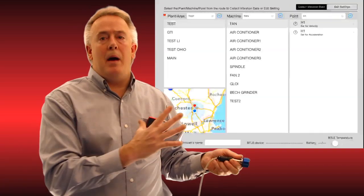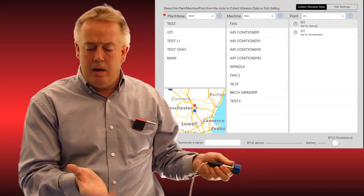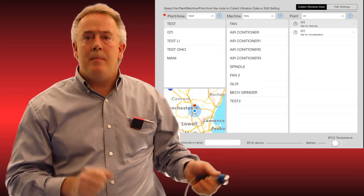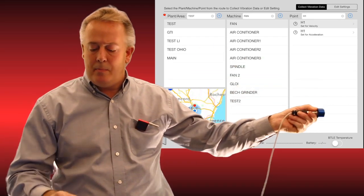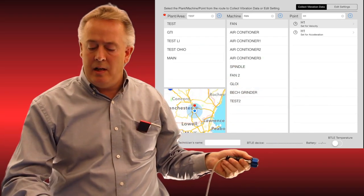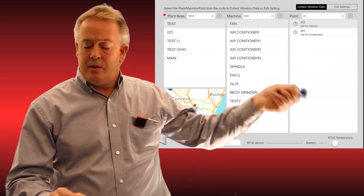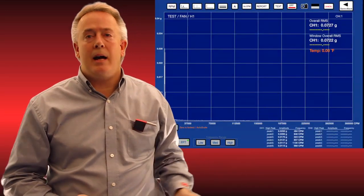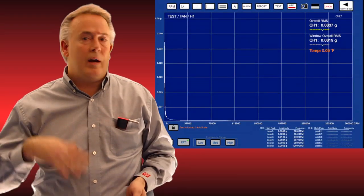Hit save and back, it goes back to the hierarchy screen, and he's done with that measurement point. He moves to the next measurement point which is H1 acceleration. He would highlight that, simply take his measurement, hit save back again, and he is done with that point and moves on.